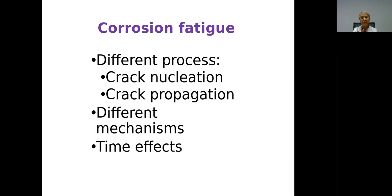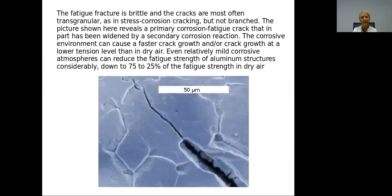The main processes are nucleation and propagation, with different mechanisms involved. There is also an important effect of time — how long you stay in one of those situations. Here is an example of a fatigue crack, which is mainly transgranular and not branched, but you also see that the corrosive effect can widen the crack.